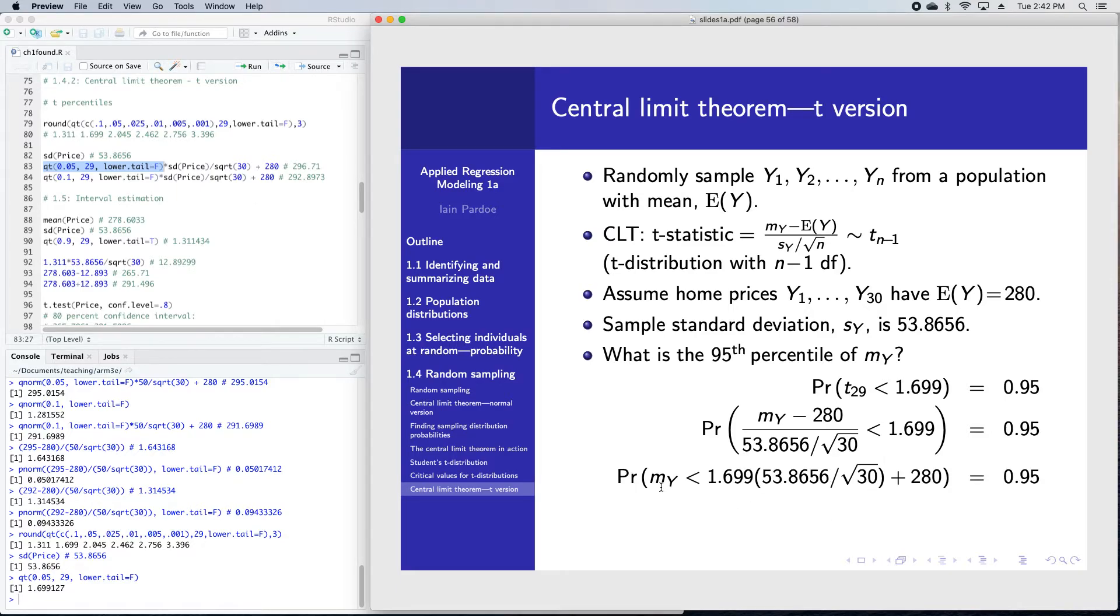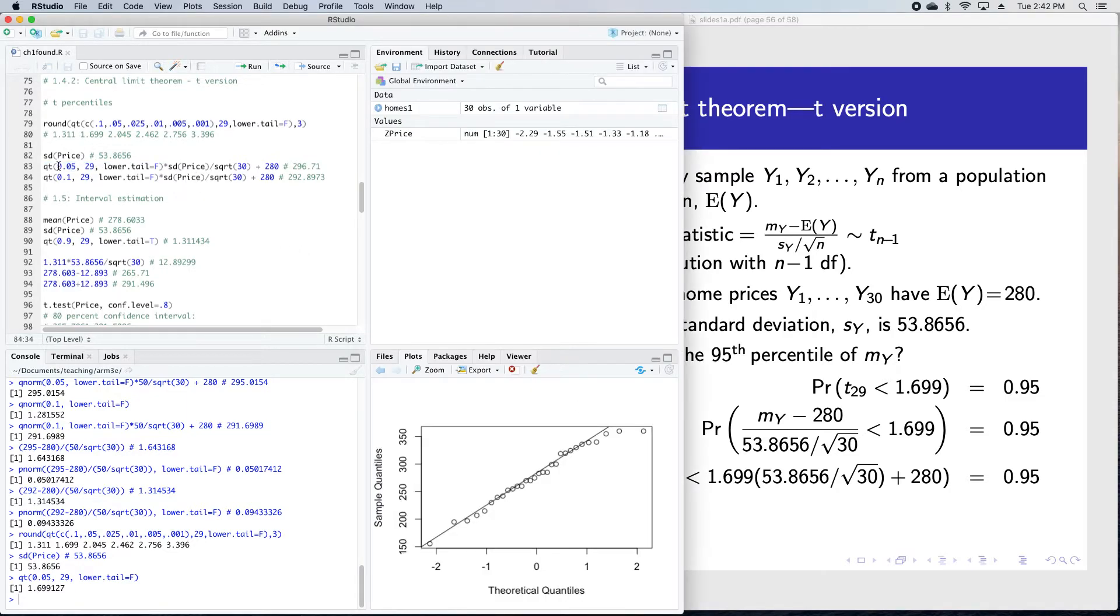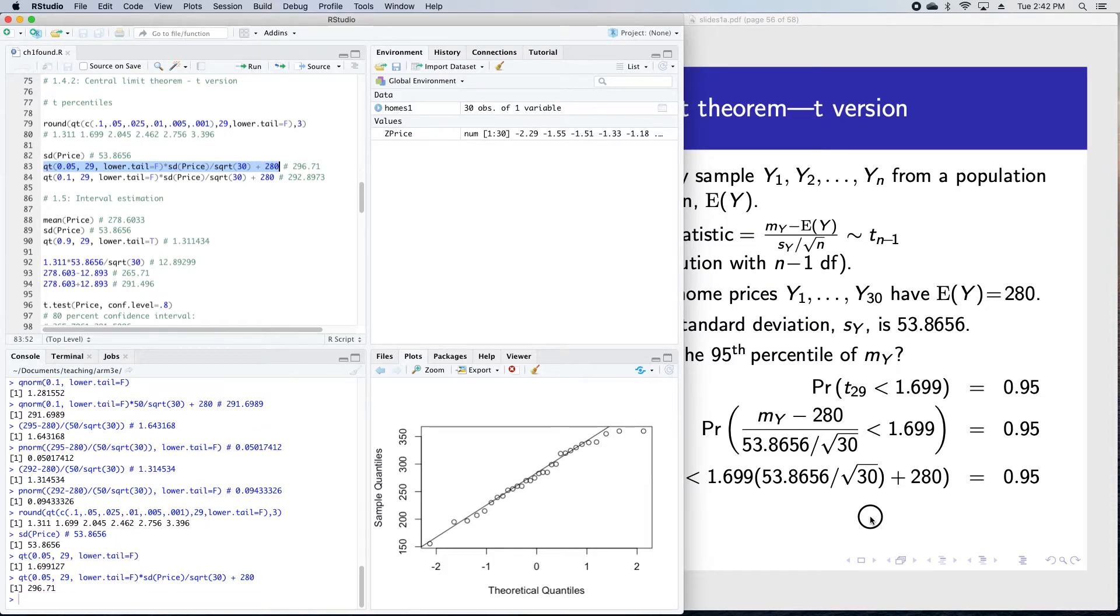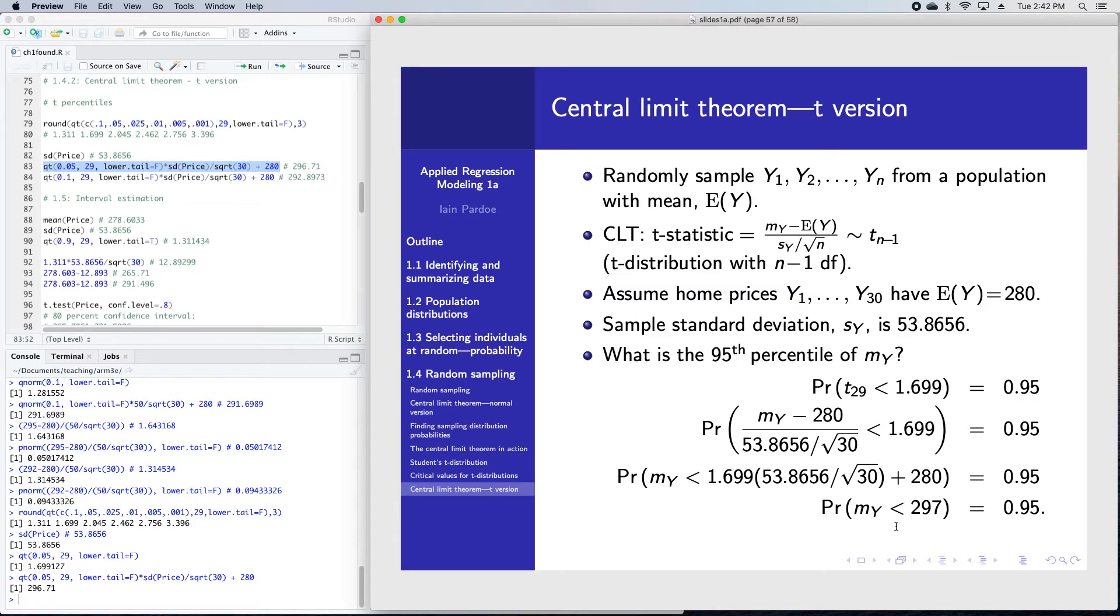Then I rearrange this by multiplying both sides by 53.8656 over root 30 and adding 280. So I isolate the sample mean on the left hand side of the inequality. If I run that, I get 296.71 or 297 rounded to the nearest whole number. So the 95th percentile of the sample mean is $297,000.